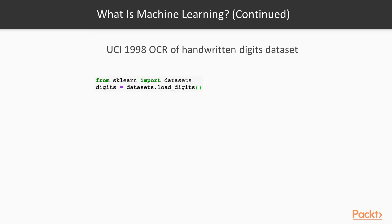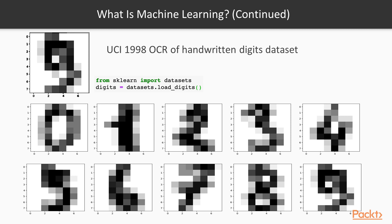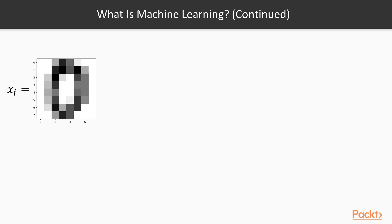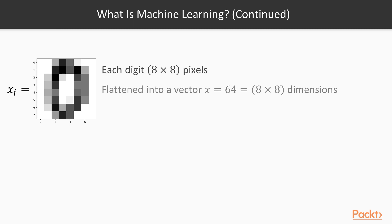We can start looking at this with an illustrated example. By opening up scikit-learn, we can load the digits dataset, which is an optical character recognition dataset of handwritten digits. The handwritten digits cover the span from 0 to 9. A particular example, looking at one digit, is an image of 8x8 pixels. We often flatten this image into a vector, and we'll be using vectors in the further presentation.